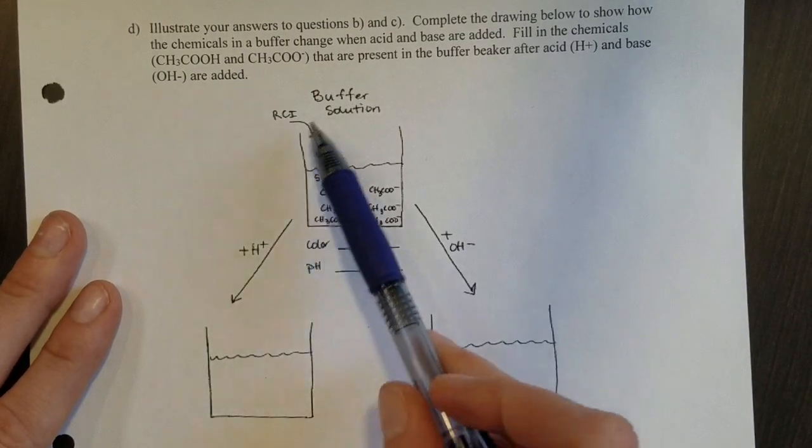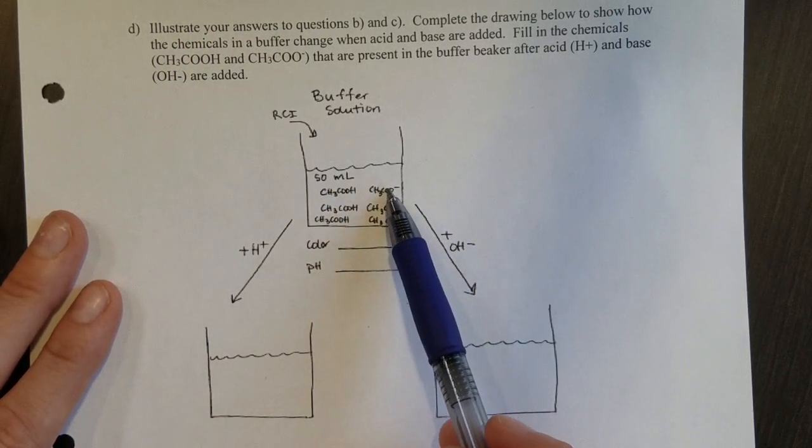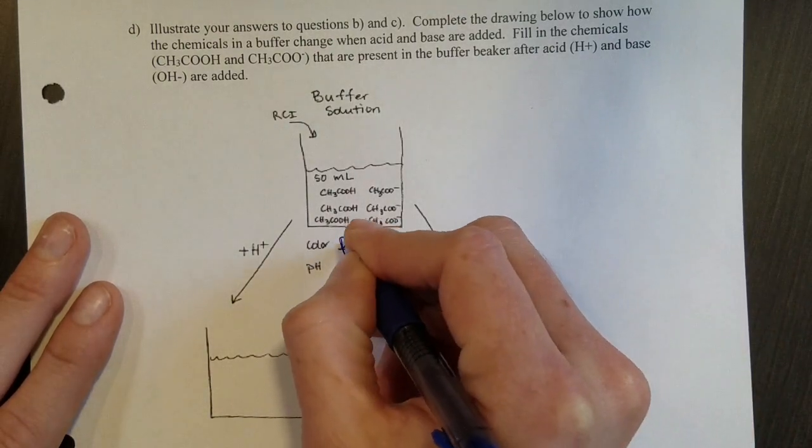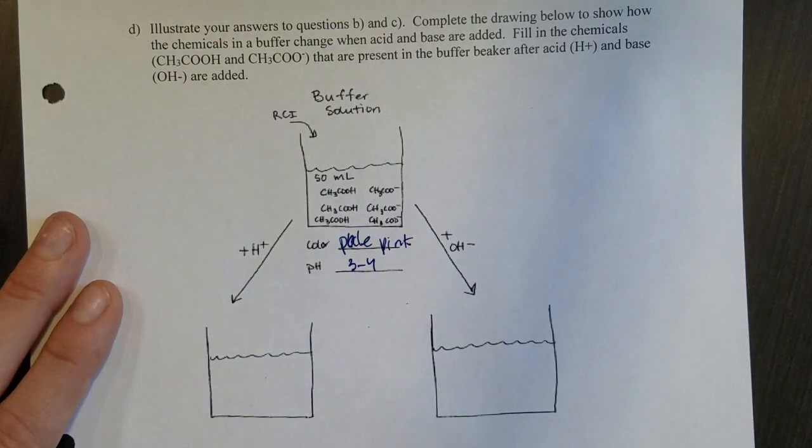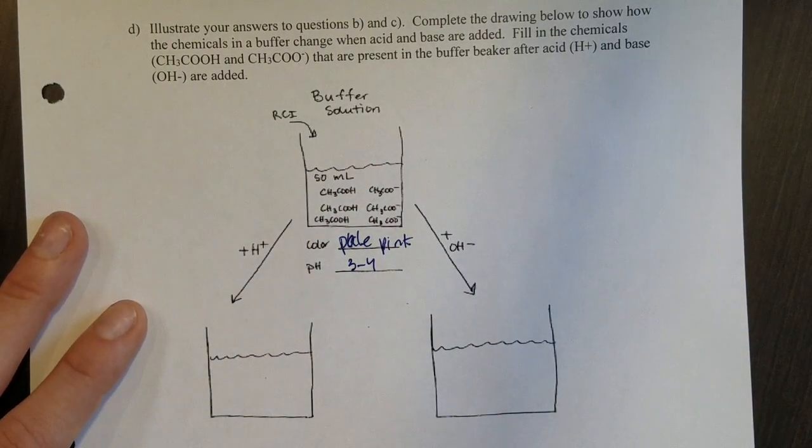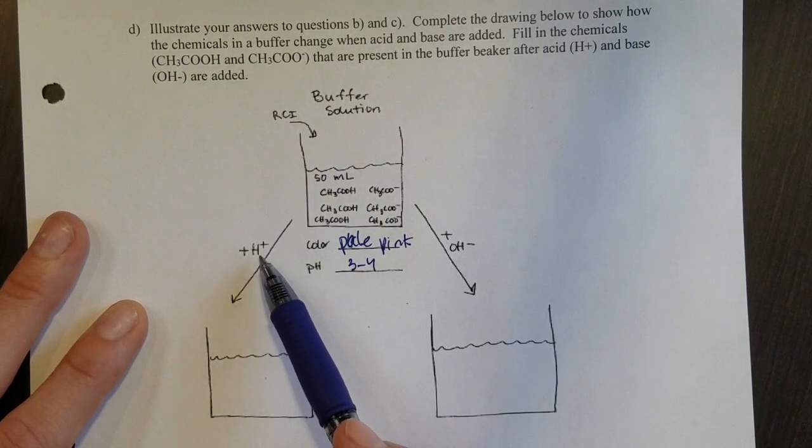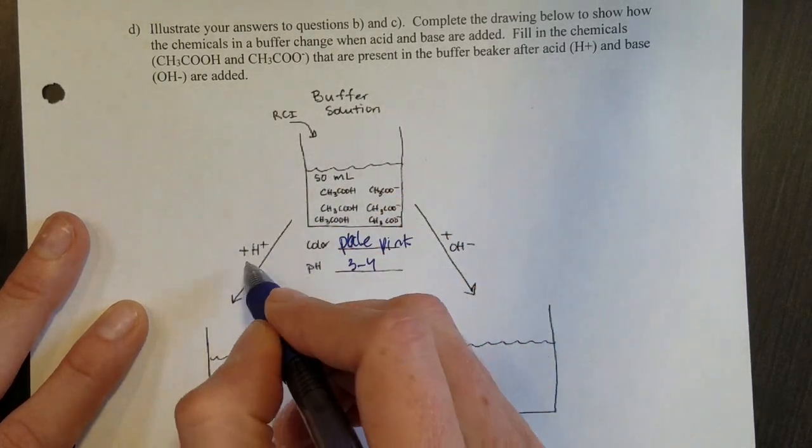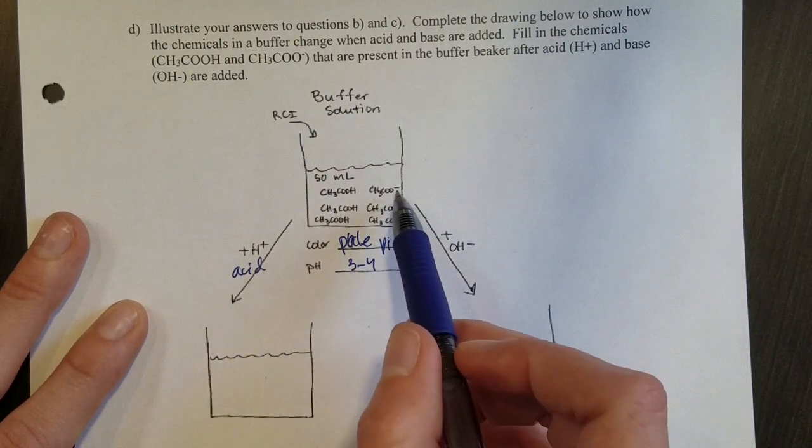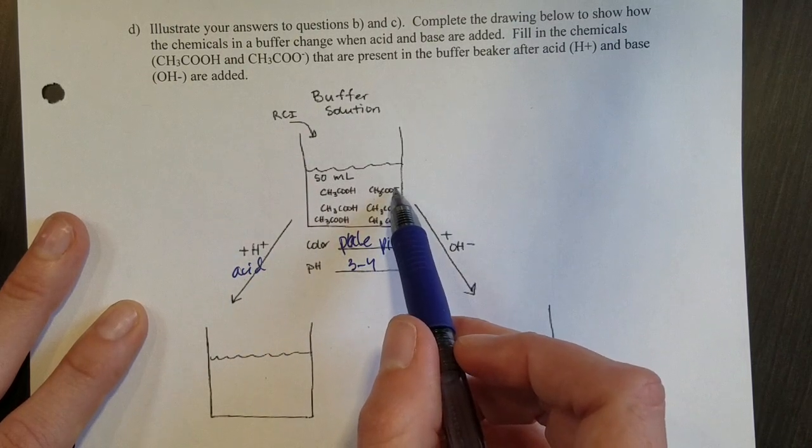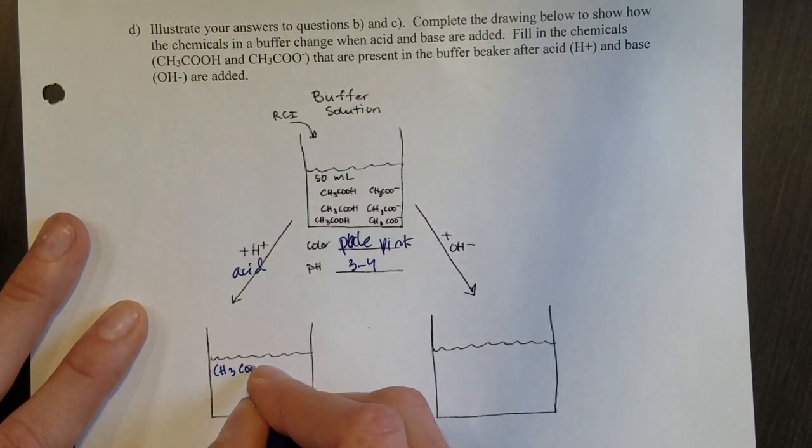So in part C we're going to illustrate or we're going to have this beaker with the buffer in it. You can see the weak acid here and the conjugate base. This again will probably be some kind of pale pink and a pH of around three to four when you measure that. Check if that's correct when you watch the video. So when I add H+ to this we want to think back to the last page we were looking at. H+ is going to be an acid that reacts with my conjugate base. So that acid will go in and protonate we say or add protons onto some of these bases. So the other acids these ones here will just sit there untouched.